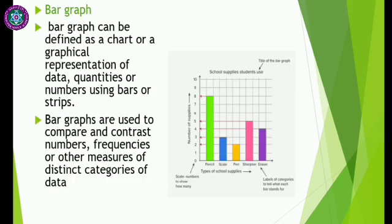The second type is the bar graph. A bar graph can be defined as a chart or graphical representation of data quantities using bars or strips. It is another important type of statistical diagram. The length of the bar shows the quantity of different things. It is one of the simplest and most widely used graphs in geography, made up of several bars and columns.